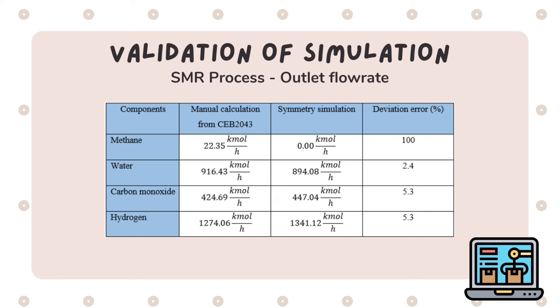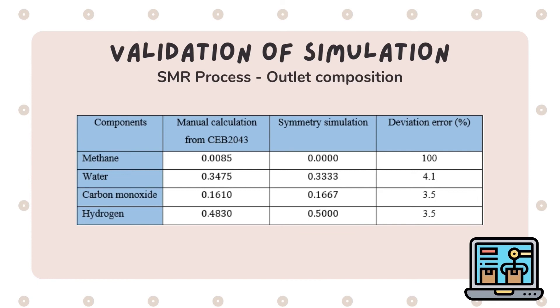Next, the SMR outlet composition values were compared. Similar with the previous case, methane deviation error is 100%. The error for water is 4.1% while both carbon monoxide and hydrogen deviation error are 3.5% each.